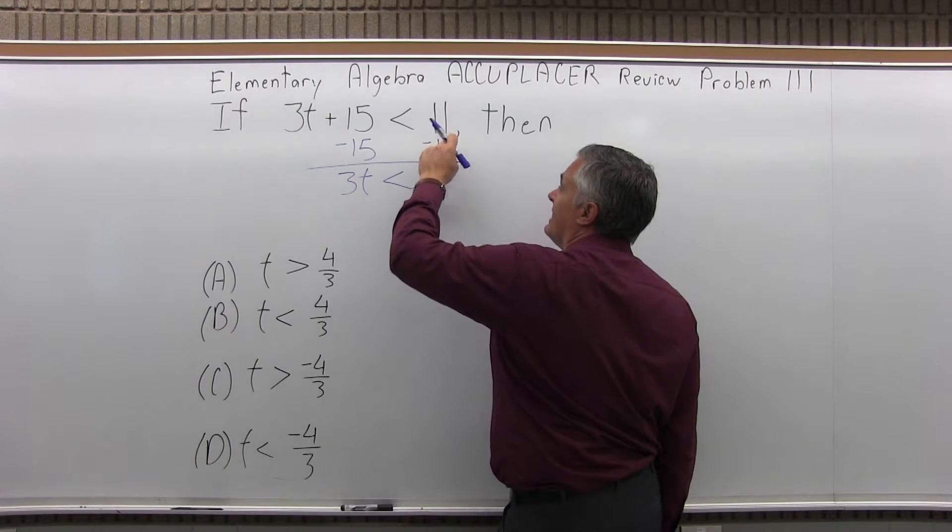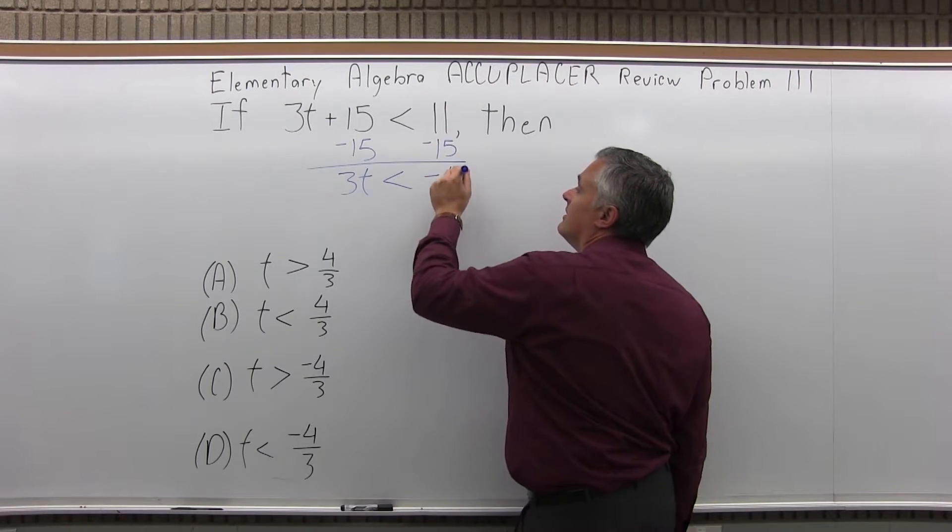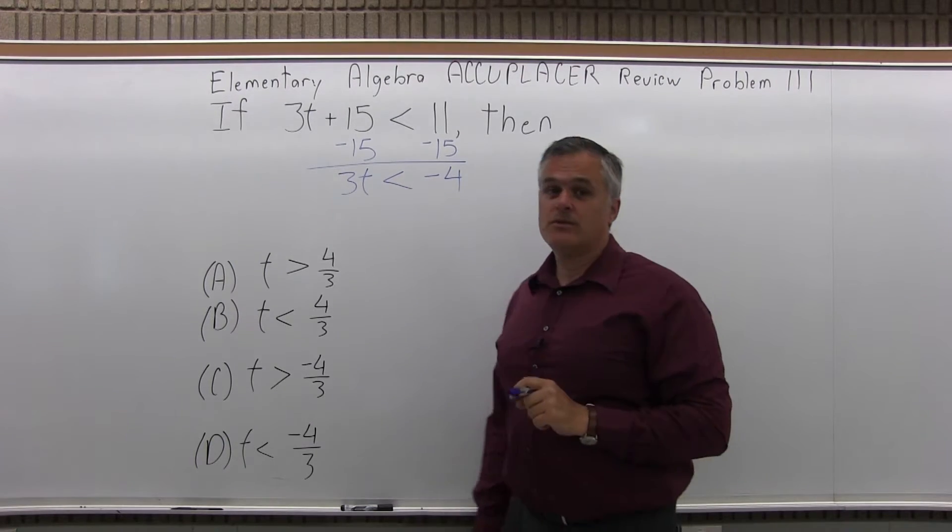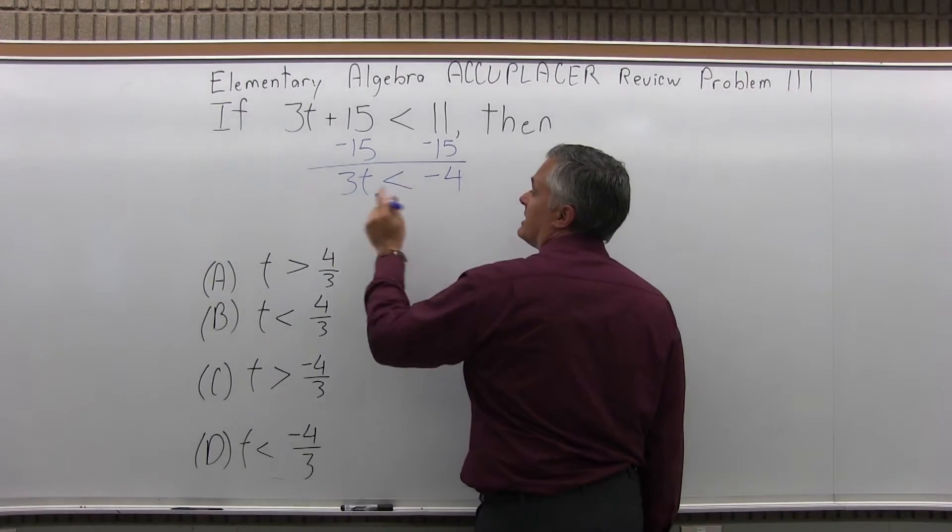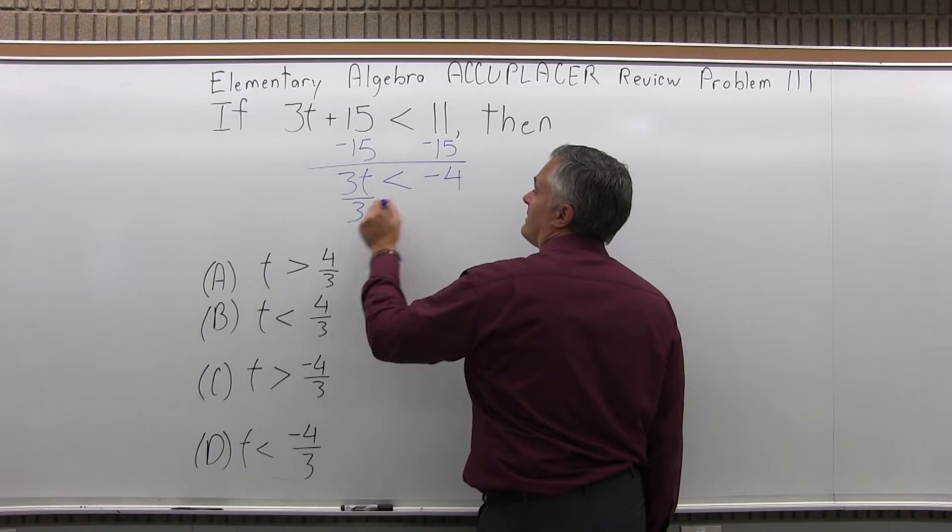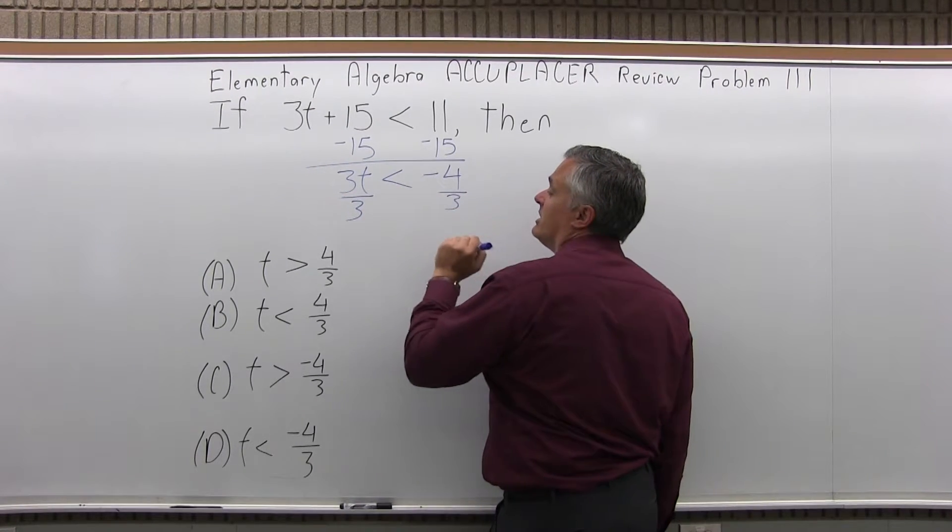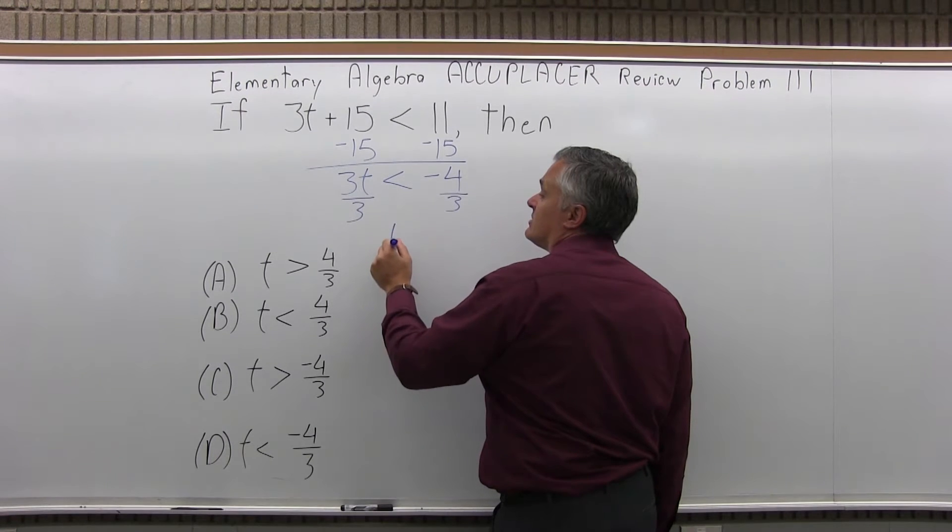Positive 11, negative 15 is minus 4. Now, I want to solve for t, so I'm going to divide both sides by 3. Left side divide by 3, right side divide by 3. On the left, the 3's cancel, so I'll have t.